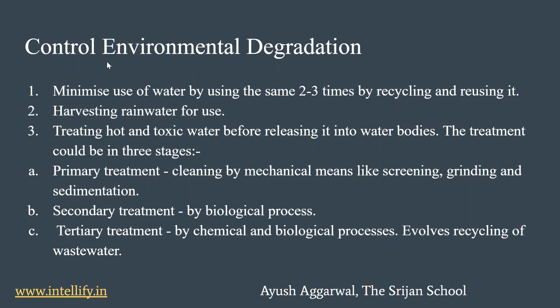The last topic we are going to discuss is the control of environmental degradation. First, the method for controlling environmental degradation is minimizing the use of water by reusing and processing water two or more times at successive stages, and recycling and reusing the water itself. We can also harvest rainwater effectively to meet our water requirements.